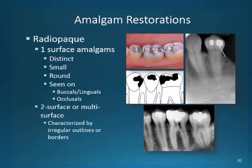Amalgam restorations are metal restorations — also referred to as fillings — and are definitely very radiopaque. They are a metal alloy and can be very distinct in their shape depending on how the restoration needed to be placed. They can be round, small, or large, located on the buccal, lingual, or occlusal areas of the teeth. These images are showing two separate occlusal amalgam restorations, with a diagram of several as we see in the radiograph.